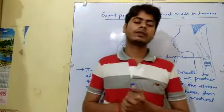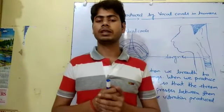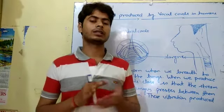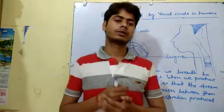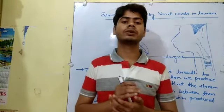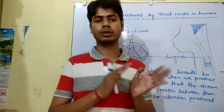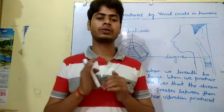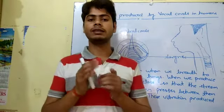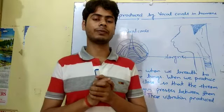In the previous class we learned about how sound is produced by vibrating objects. In this class we will discuss how sound is produced by the vocal cords. In humans, sound is produced by the larynx, also known as the voice box. The larynx is situated at the top of the windpipe in the neck.